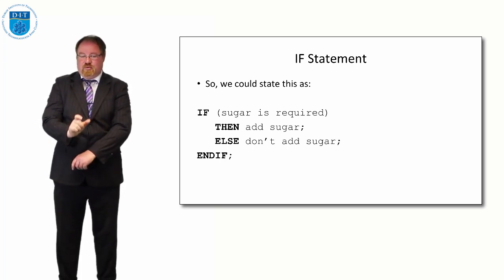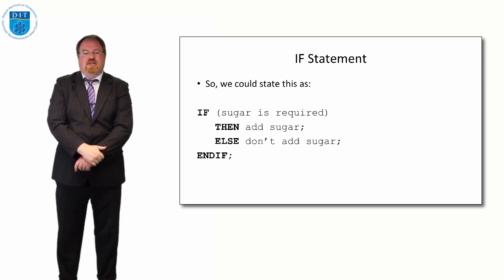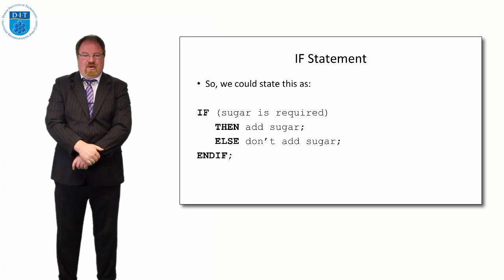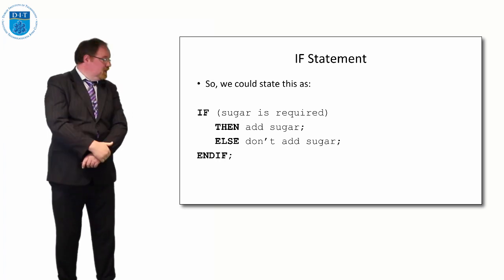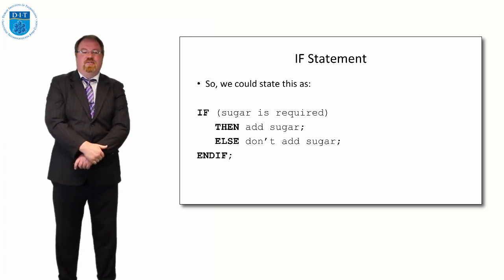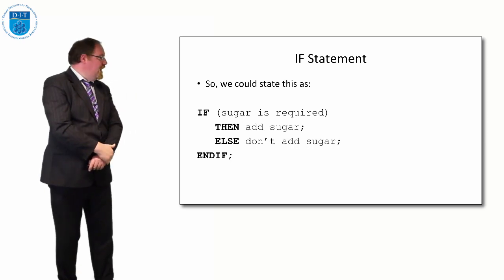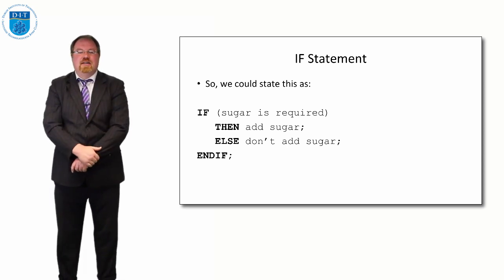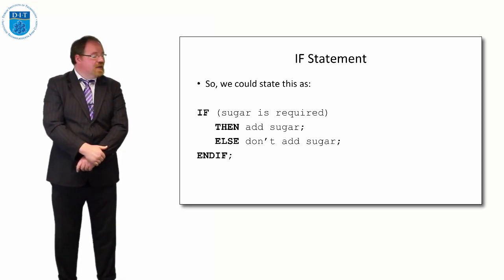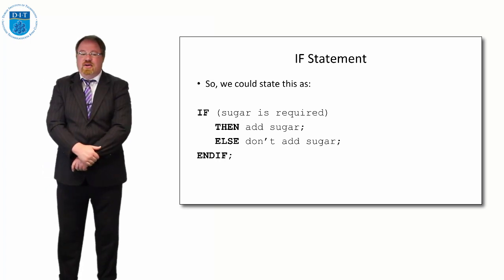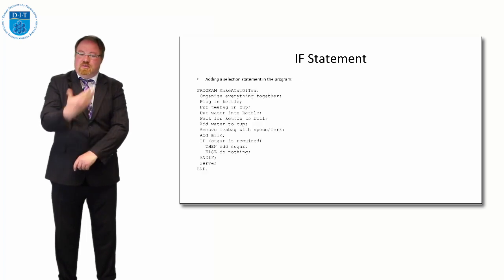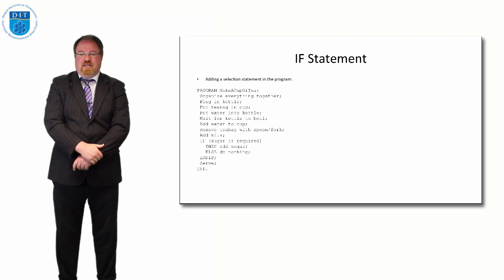We finish off that statement in pseudocode with the word endif — it's all one word ending with a semicolon. We'll notice how we've indented the then and else parts of the pseudocode. If starts at the start of the line, then is pushed in by a tab, else is pushed in by a tab, and then endif closes off by starting at the start of the line again. So we read it: if sugar is required then add sugar, else don't add sugar, endif.